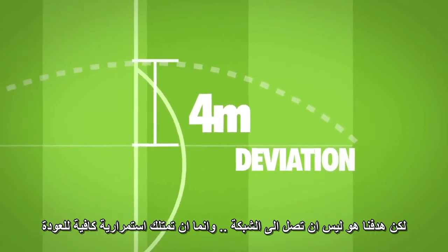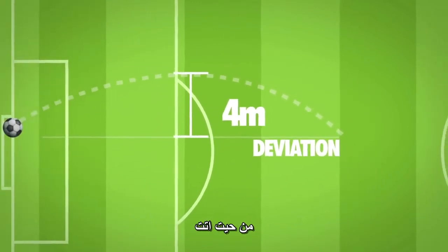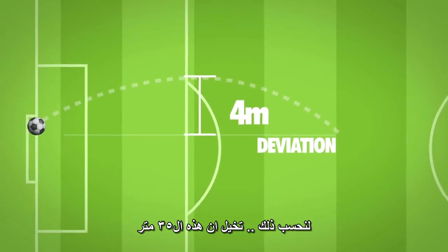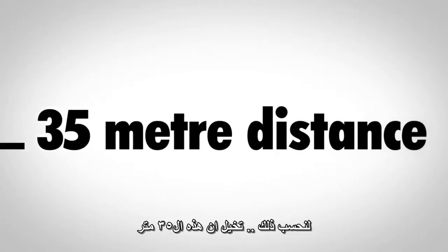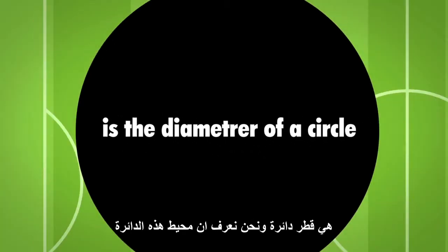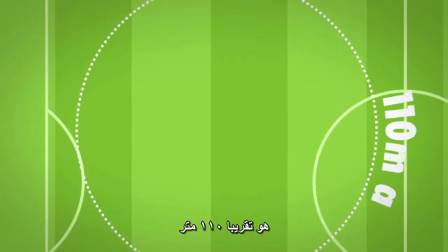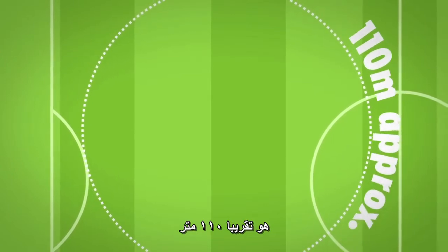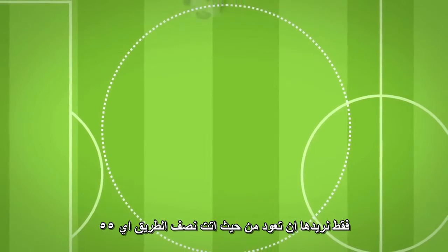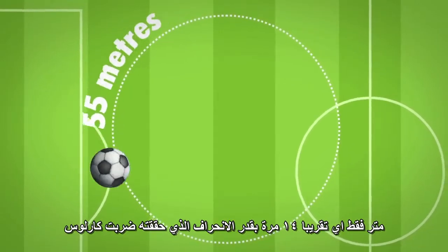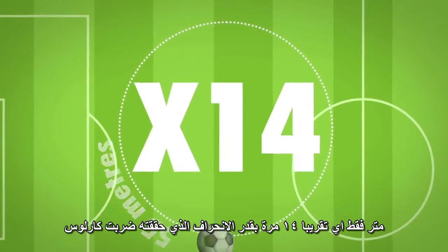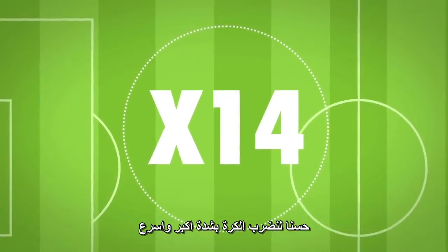For our ball to create enough momentum to send it back from whence it came, let's extrapolate. Imagine this 35-meter distance is the diameter of a circle. We know that this circle's circumference would be approximately 110 meters. But we don't need the ball to travel 360 degrees — we just want it back where it started. Halfway: 55 meters. That's around 14 times more deviation than Carlos achieved.